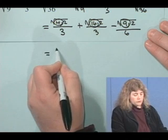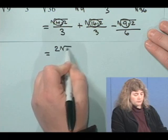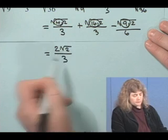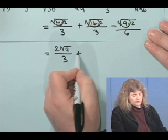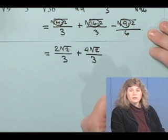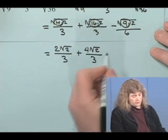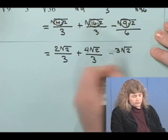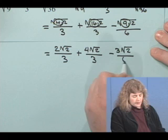The square root of 4 is 2, so now we have 2 times the square root of 2, and that is divided by 3. The square root of 9 is 3, so we have 3 times the square root of 2, and then divided by 6.